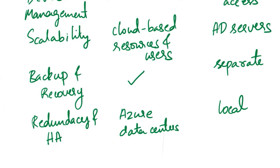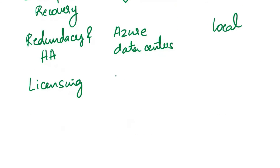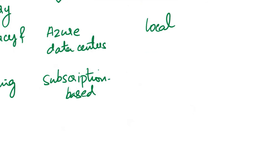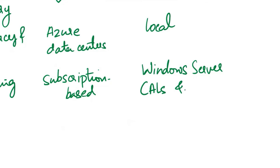The next aspect of comparison is licensing. Azure Active Directory licensing is subscription-based, often included with Microsoft 365 licenses. On-premises Active Directory licensing is typically based on Windows Server CALs — that is, client access licenses — which are licenses required by Microsoft to allow client devices or user accounts to access the services and features of a Windows Server operating system.